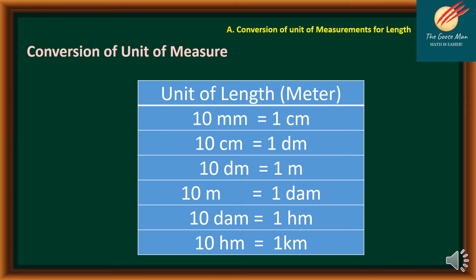Here is the table for conversion of units of length. The standard unit of length is the meter. For example: 10 millimeters equals 1 centimeter, 10 centimeters equals 1 decimeter, 10 decimeters equals 1 meter, 10 meters equals 1 dekameter, 10 dekameters equals 1 hectometer, and 10 hectometers equals 1 kilometer.